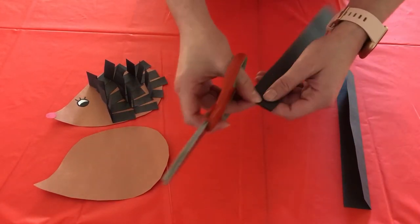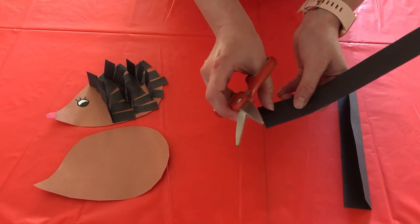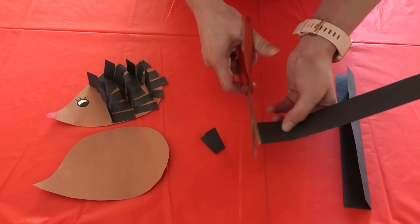Next you are just going to cut out the quills. Try to keep them thinner but not too thin, because remember we're going to have to glue them down. This way we can get more spikes on there.